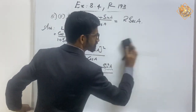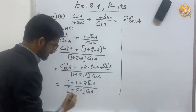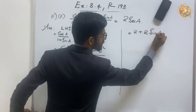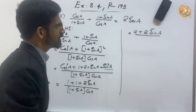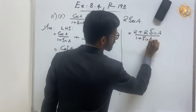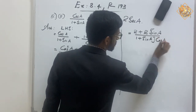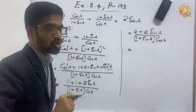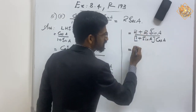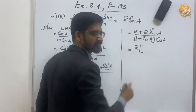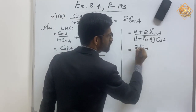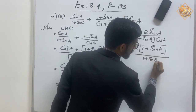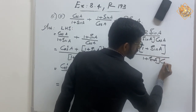So the numerator is 1 + 1 = 2, giving us 2 + 2sin(a), over (1 + sin(a)) × cos(a). In the numerator, 2 + 2sin(a), we can see that 2 is a common factor. Taking 2 outside the bracket gives us 2 × (1 + sin(a)), over (1 + sin(a)) × cos(a).